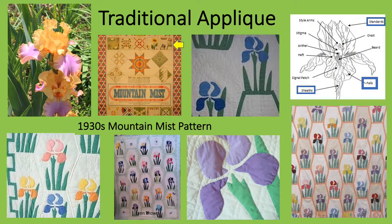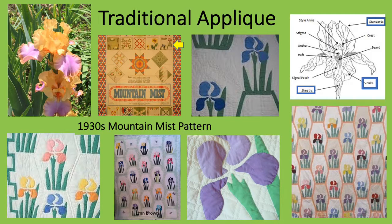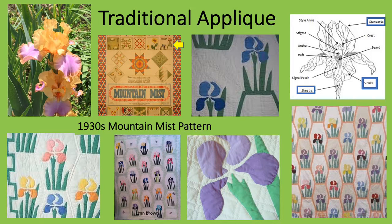To get back to our iris, traditional appliqué uses a combination of separate pieces applied to a background. You're looking at a number of examples of quilts made using a very popular 1930s appliqué pattern developed for Mountain Mist Quilt Batting Company. To promote their batting, the company put patterns on their wrappers and many people used them. I find this design, which includes only the iris's standards, falls, and sheaths, clearly depicts an iris. Quilters connected their appliqué iris blocks in different ways to create a quilt.